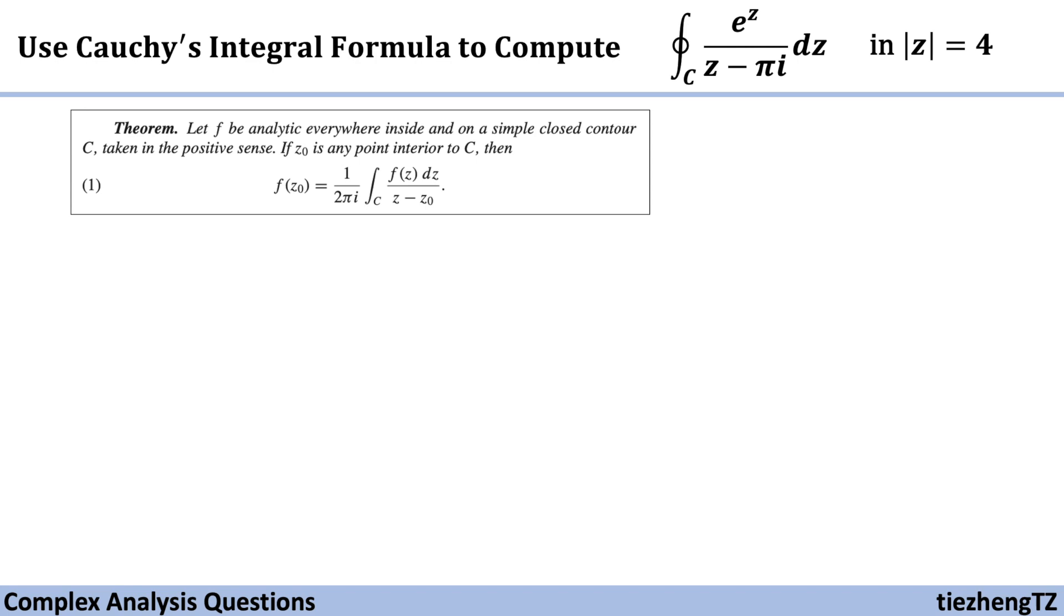For our question, the domain or closed contour |z| = 4, we know it is a circle with the center at the origin (0,0) and a radius of 4.